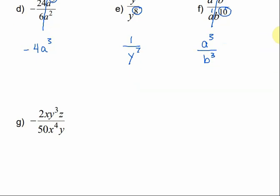For g, we have a lot going on. The big numbers: negative 2 over 50 reduces to negative 1 over 25. For the x's, x to the 1 on top and x to the 4th on the bottom: 4 minus 1 is 3, so x to the 3rd goes on the bottom. For the y's, y to the 3rd on top and y to the 1 on the bottom: 3 minus 1 is 2, so y squared goes on top. The z has no pair, so it stays where it is — we can write it without the extra 1 since other terms hold its place on top.